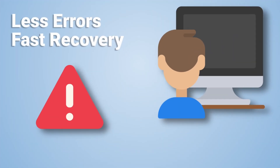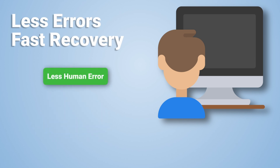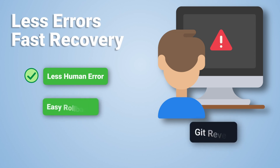The next major benefit is less errors and easy and fast recovery when problems do occur. Since changes are being applied automatically, there's less human error on those applies. Secondly, if an error does get through your GitOps pipeline, since everything is in Git, you can easily do a Git revert to go back to a previous version of the configuration. This is known as a GitOps rollback and it's extremely powerful. You can be confident that even if your changes don't work, it's easy enough to get back to a previous state.